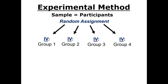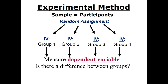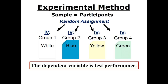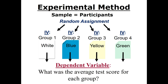Now we are ready for the dependent variable. The dependent variable is the outcome measure. It is the variable that researchers are predicting will be affected by their manipulation of the independent variable. The dependent variable is used to determine if there is, in fact, a difference between the groups because of the independent variable. In this experiment, the dependent variable is the student's test performance. Did the color of the paper cause a difference in the average test score of the groups?